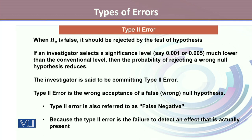When H0 is false, it should be rejected by the test of hypothesis in an ideal situation. And if an investigator selects a significance level, say 0.001 or 0.005, that is fairly small, then the probability of rejecting a wrong null hypothesis reduces. So the investigator is said to be committing Type II error.